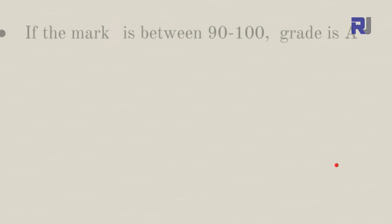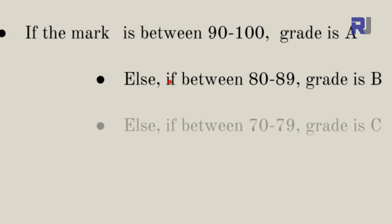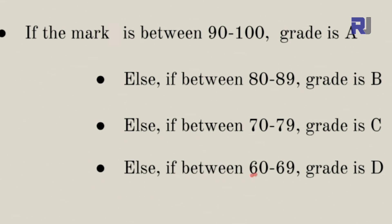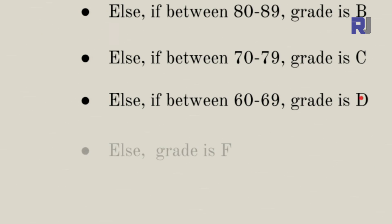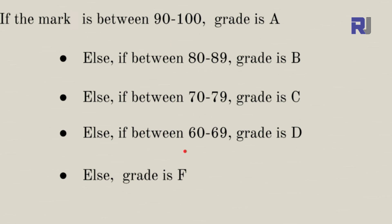Here is a grading scheme used in many schools: if the mark is between 90 and 100, grade is A — that is the condition and the action. Else if between 80 and 89, grade is B. Else if between 70 and 79, grade is C. Else if between 60 and 69, grade is D. Else, grade is F — meaning all previous conditions failed and the person has not passed.